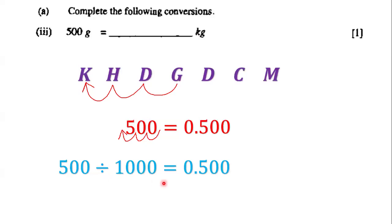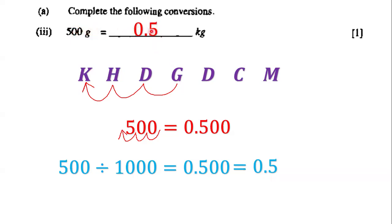Showing our working: 500 divided by 1,000 equals 0.500, and dropping the trailing zeros gives us 0.5. So 500 grams equals 0.5 kilograms.